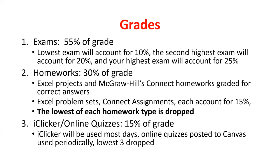Starting next Monday, I'll use iClickers in class. There are always 10 points possible per class session. Just for showing up and answering, you get 6 out of 10 base points. Each correct answer earns additional points. Get all four questions right and you get 10 out of 10. Get them all wrong — you still get 6 out of 10 just for showing up.